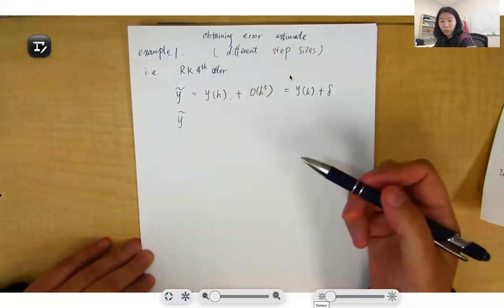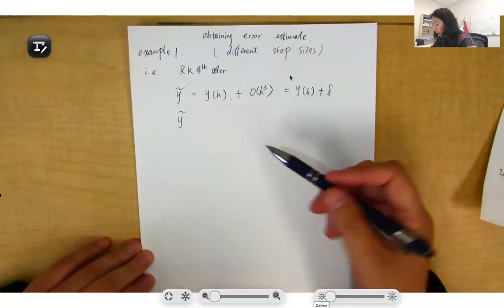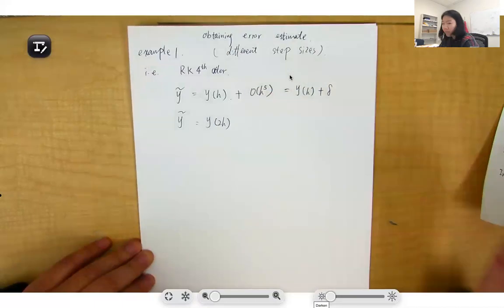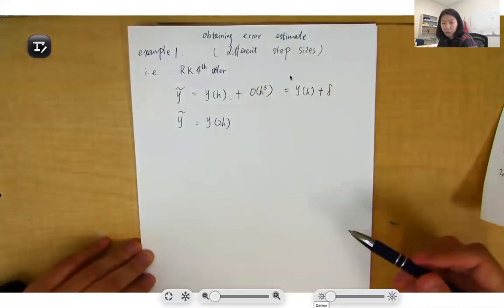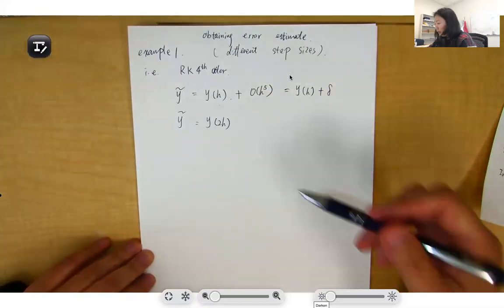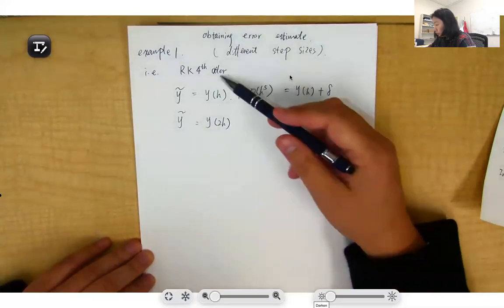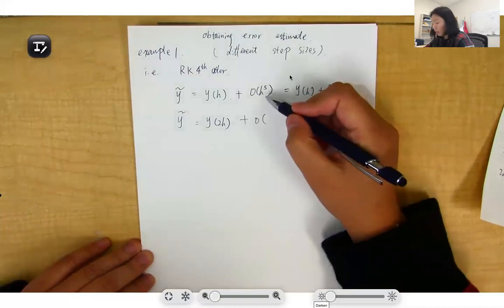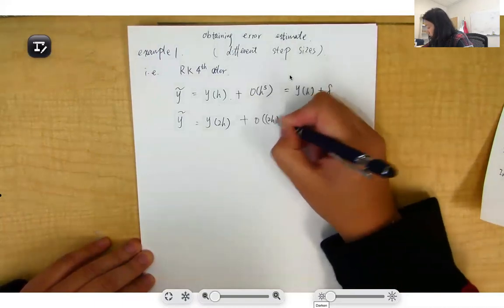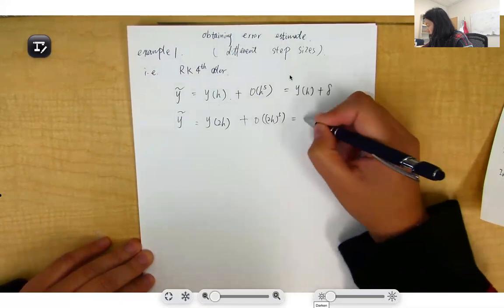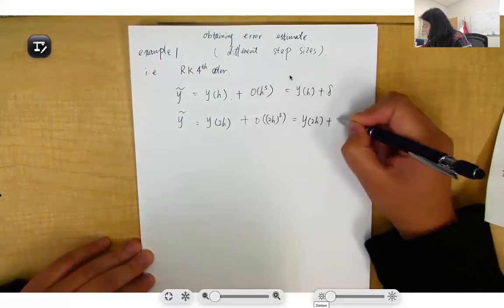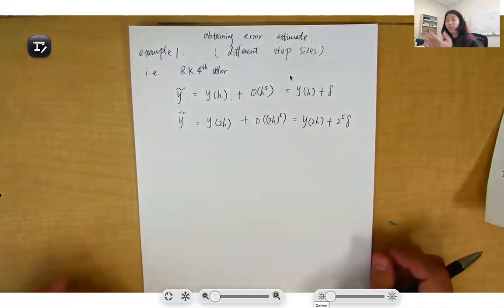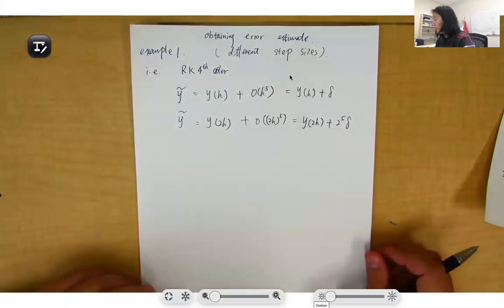For our true value, if you increase the size from h to 2h, so we use y_2h—that is using step size 2h to obtain the estimate value using Runge-Kutta. Instead of h^5, it will be (2h)^5. You will get y_2h + 2^5·σ, which is the local error after you increase the step size.